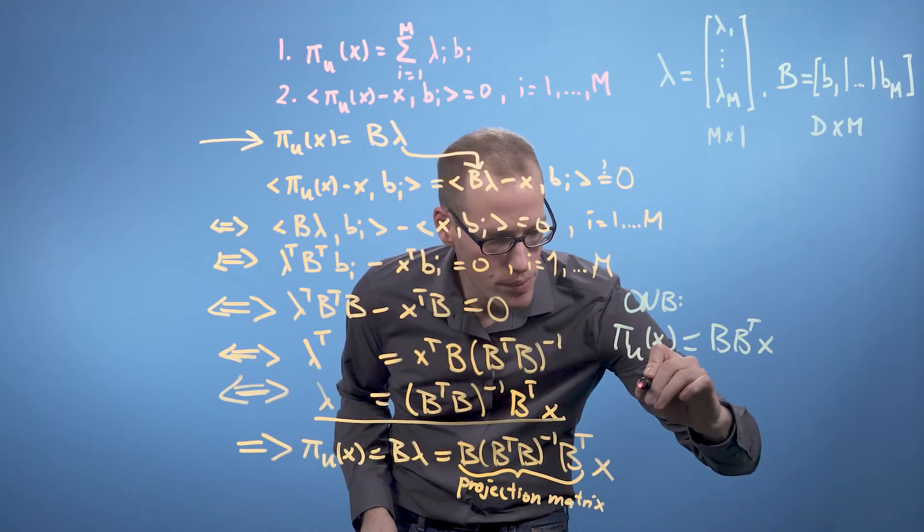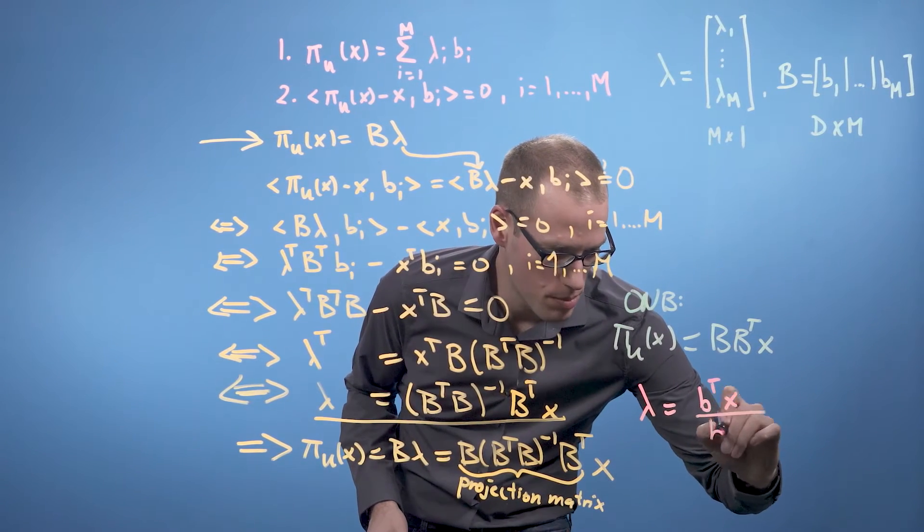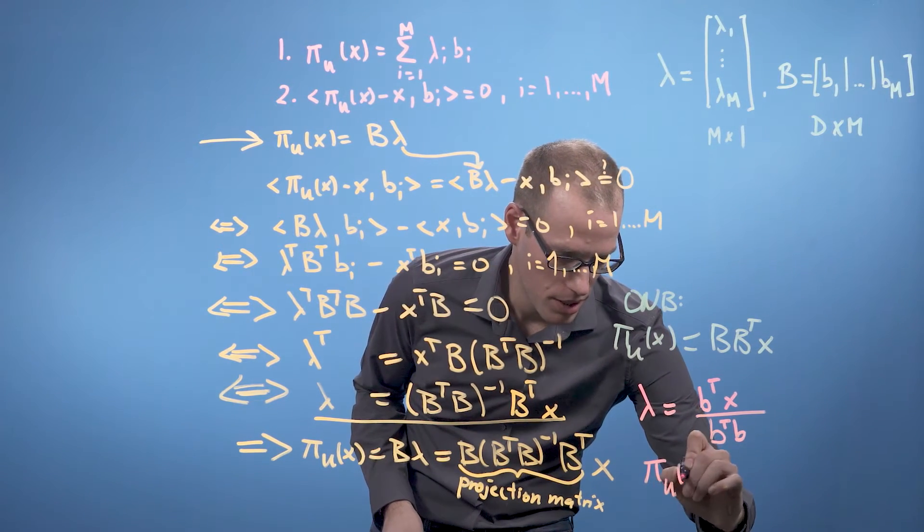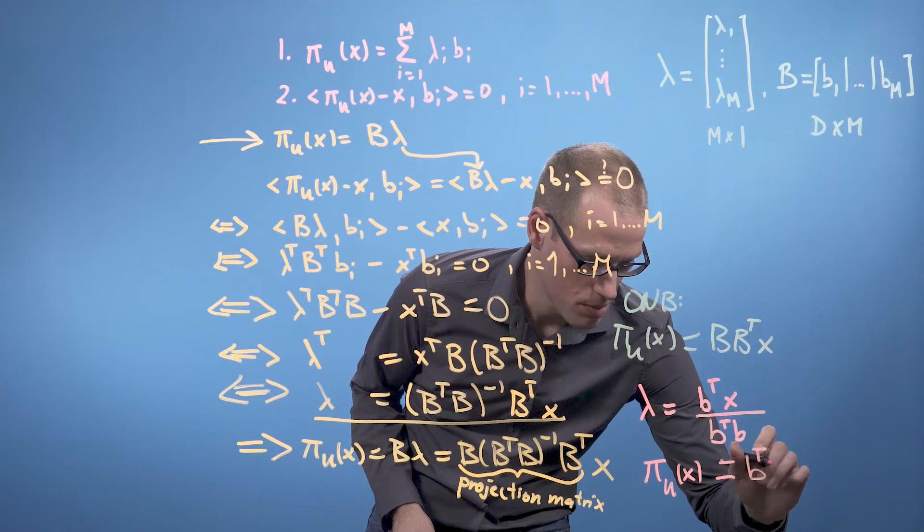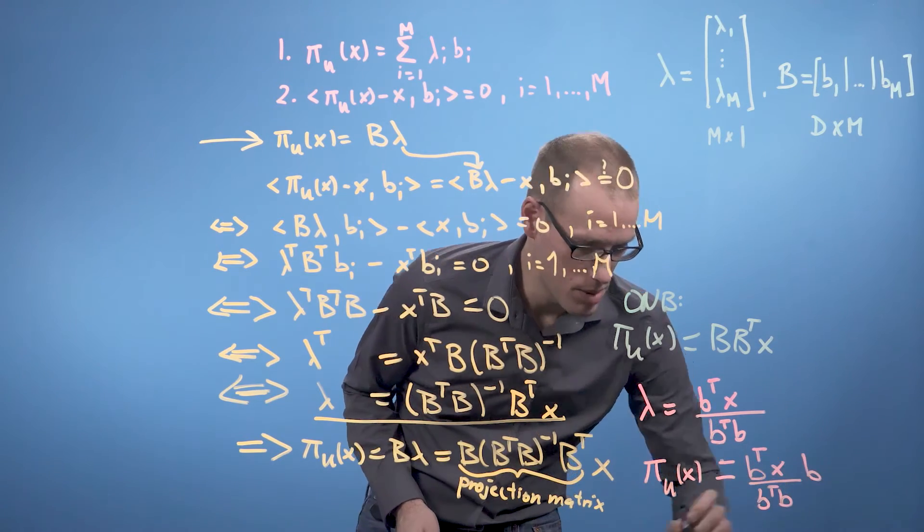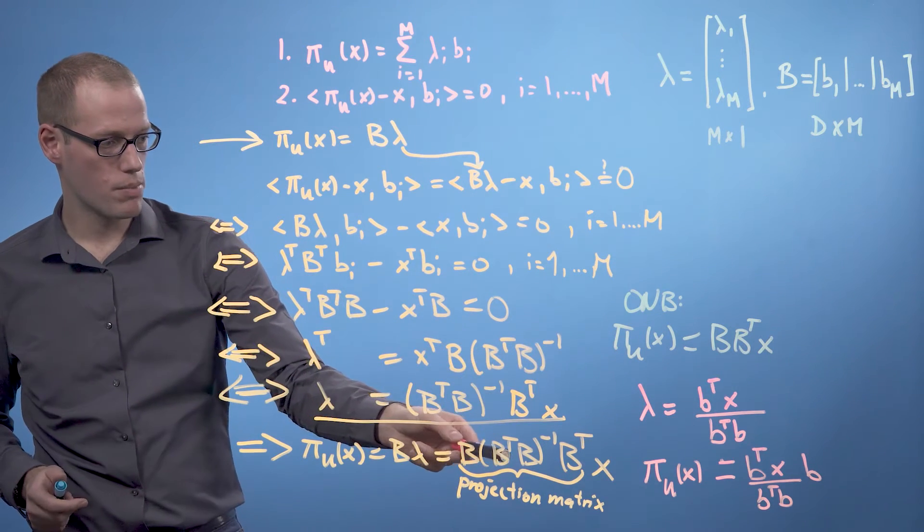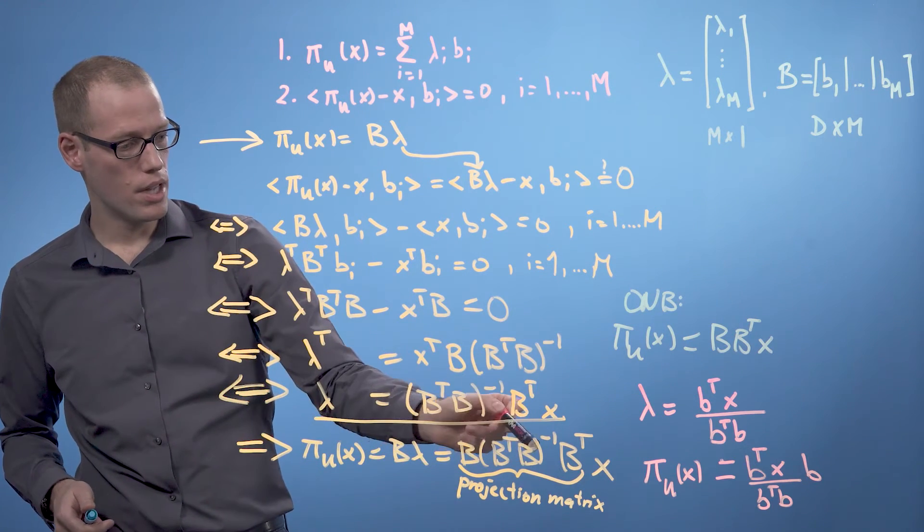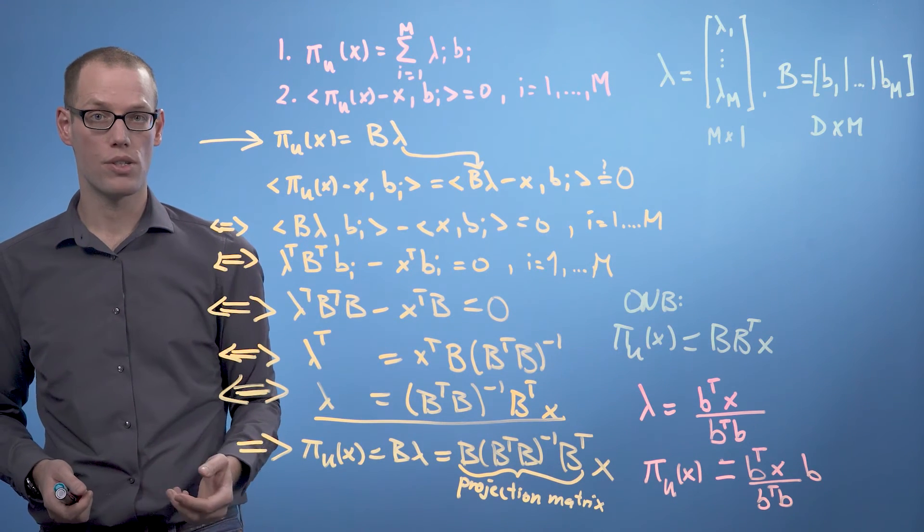Remember in 1D we got λ equals b^T x divided by b^T b. And we got a projection point π_u(x), which was b^T x divided by b^T b times b. Now, b^T b is now expressed as matrix B^T times matrix B. But we now have the inverse matrix sitting here instead of dividing by a scalar. That's the only difference between these two results.